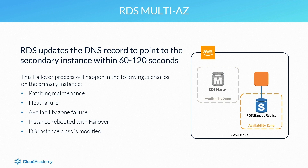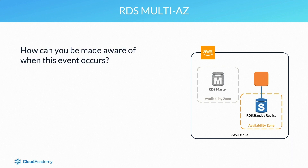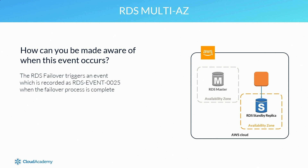Activating multi-AZ is an effective measure to ensure you have resiliency built in, whether the outage results from patching or a complete AZ outage. However, since this process is automatic and performed by RDS, how can you be made aware when this event occurs? The RDS failover triggers an event which is recorded as RDS event 0025 when the failover process is complete.